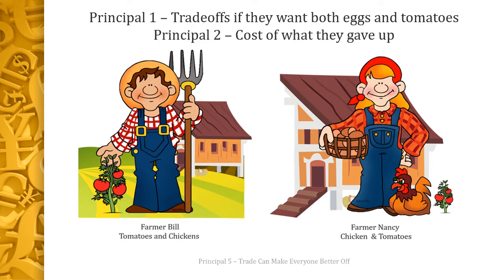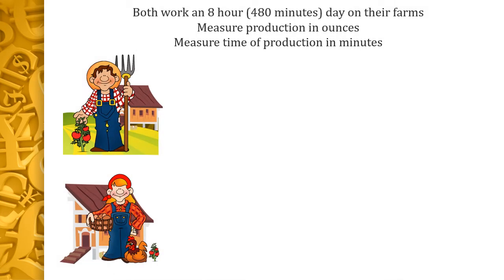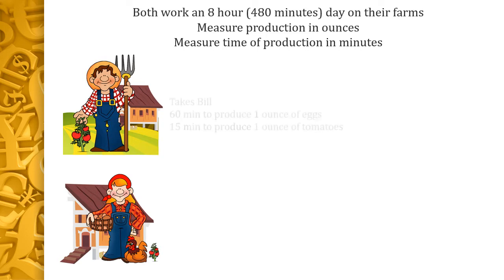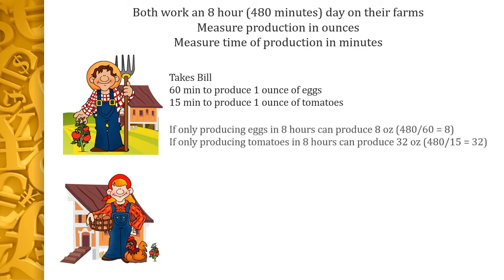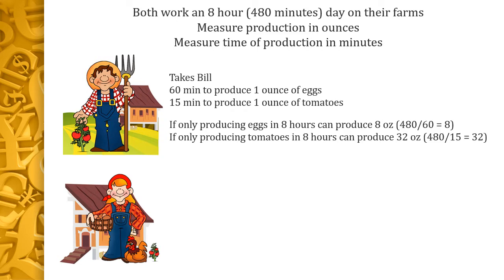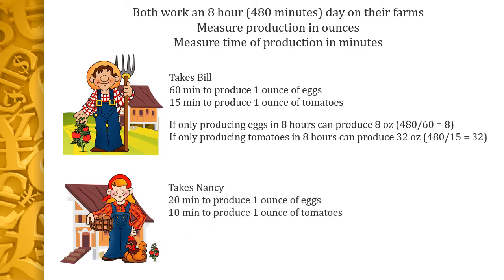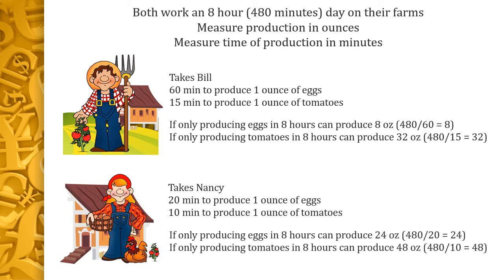Both farmers are working eight hours a day. We'll measure production in ounces and time in minutes. For Bill, it takes 60 minutes to produce one ounce of eggs and 15 minutes to produce one ounce of tomatoes. Working a full day producing only eggs, he gets 8 ounces; only tomatoes, 32 ounces. Nancy takes 20 minutes per ounce of eggs and 10 minutes per ounce of tomatoes, giving her 24 ounces of eggs or 48 ounces of tomatoes in a day.